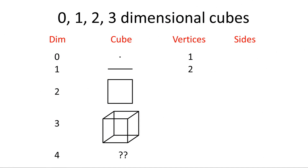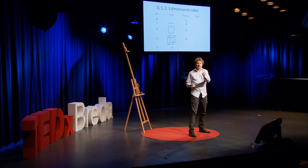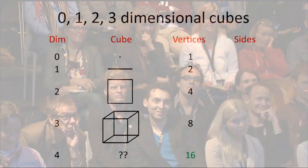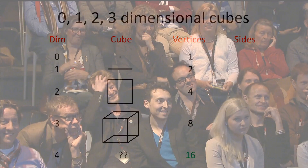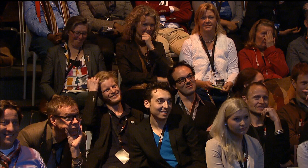We don't know what goes at the question mark, but I'm pretty sure everybody in this audience knows what is the next number in this sequence. Shout it out! Sixteen — yes! So, without ever having seen the four-dimensional cube, we already know it has sixteen corners.